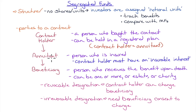Then there is the beneficiary — the third party to the contract — who receives the benefit upon death. It can be one or more individuals, an estate, or a charity. There can be a revocable designation, where the contract holder retains the right to change the beneficiary, or an irrevocable designation, where the beneficiary's consent is required to make any change.